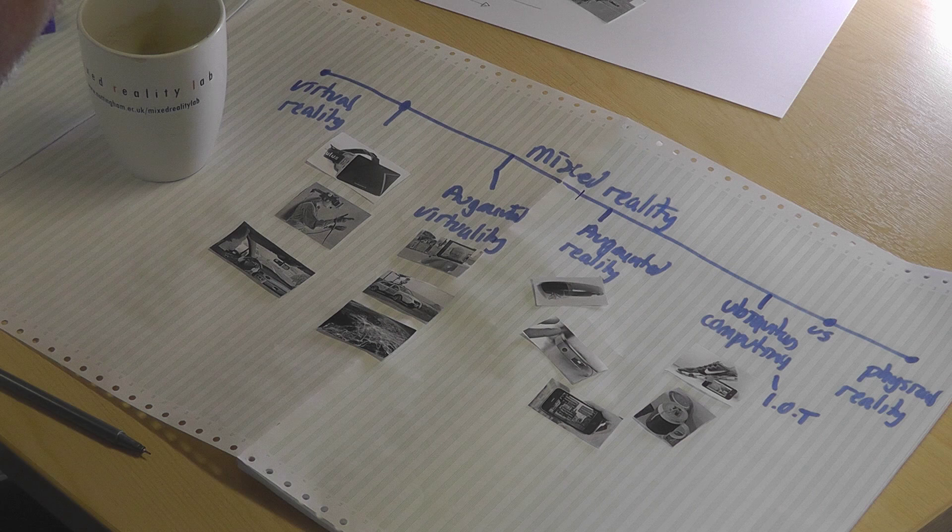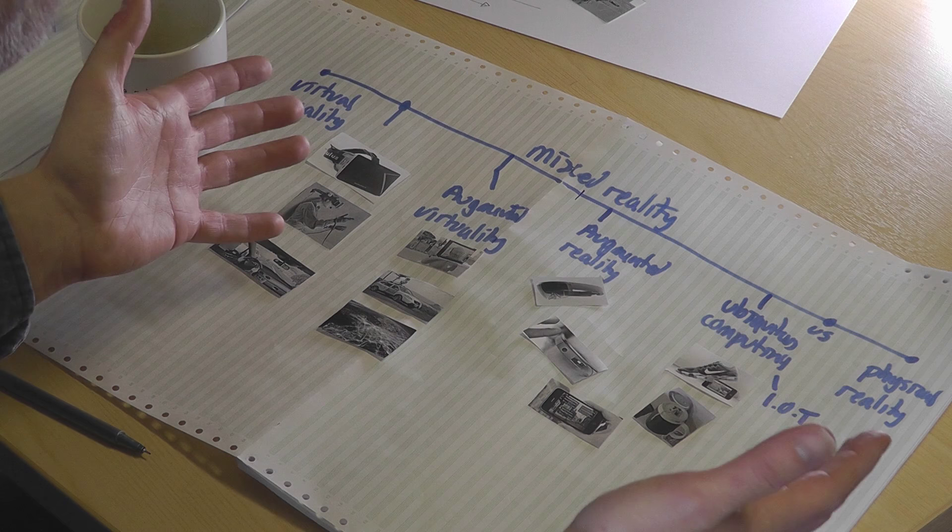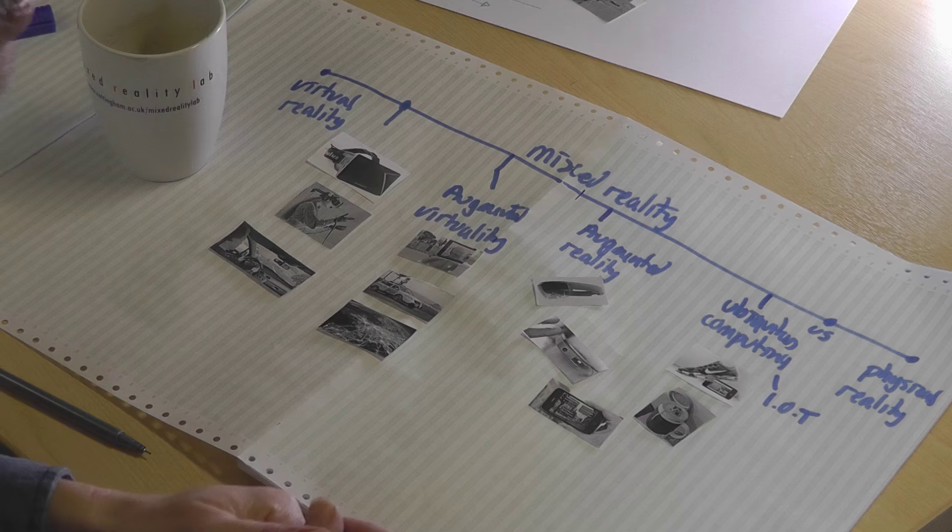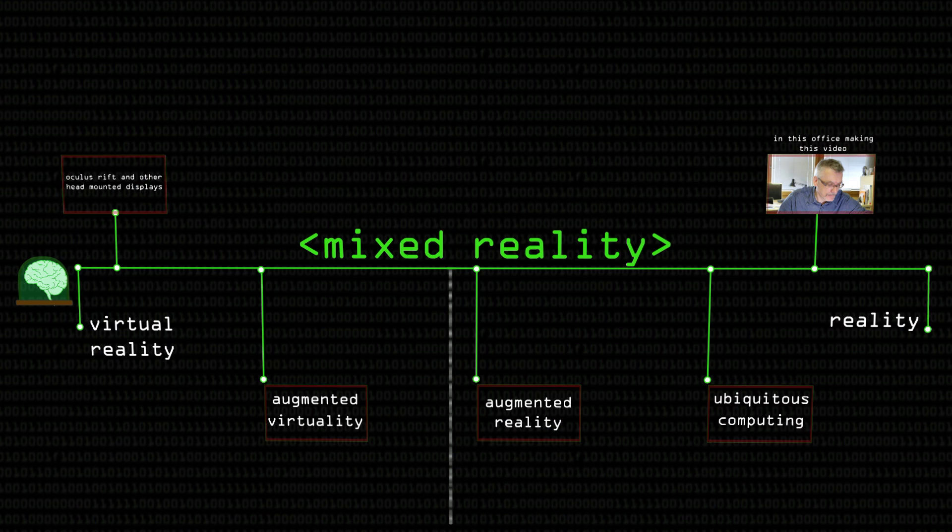So there's the picture - this is the universe of mixed reality. A lot of the technologies and underlying software techniques are actually quite similar across this spectrum. Many involve tracking people's movements, head positions, and objects in a world, and a lot use graphics in different ways. Even the devices are quite common - we see headsets on both sides of the line, but it's whether you can see through them or not. I think augmented reality and virtual reality are not really different things - they are different experiences of the same thing, which is mixed reality.